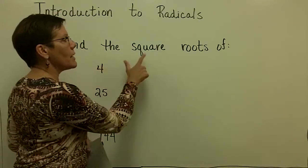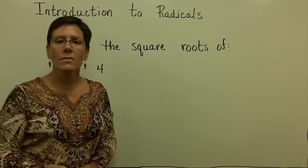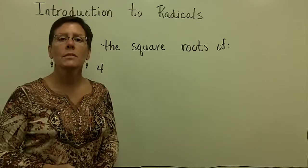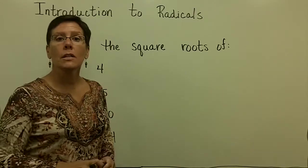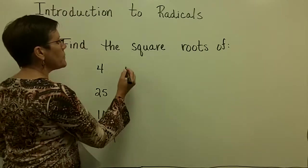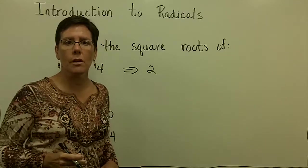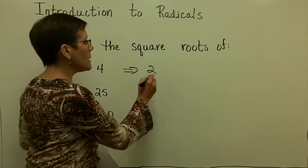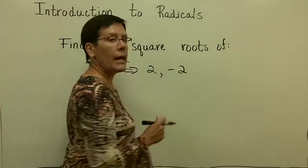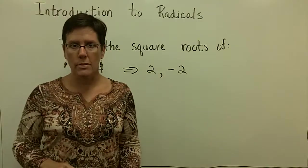When we ask you to find the square root of a number, we're asking for what number times itself gives you that value. For example, the square root of 4 is 2 because 2 times itself gives you 4. But it is also negative 2 because negative 2 times negative 2 is positive 4.